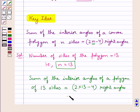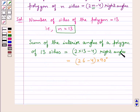Or you can say, this is equal to 26 minus 4 into 90 degrees. Since one right angle is equal to 90 degrees, this is equal to 22 into 90 degrees, which comes out to be equal to 1980 degrees.